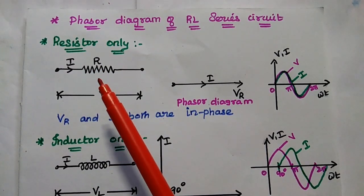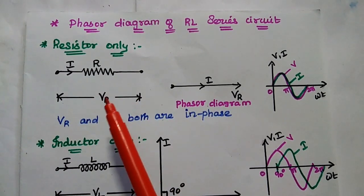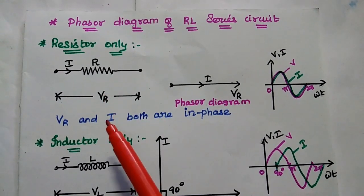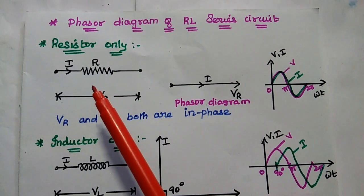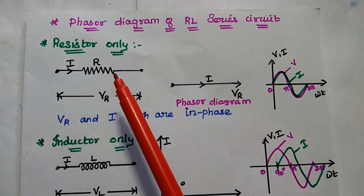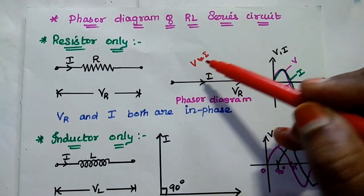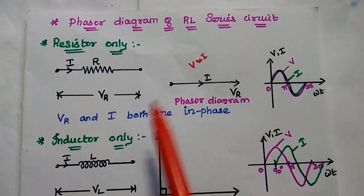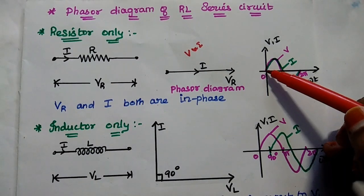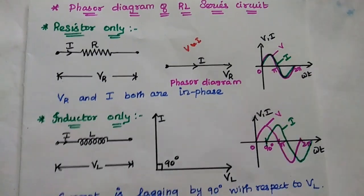First, we consider the resistor-only circuit. The current flows through the resistor and the voltage drop is VR. The relation between current and voltage is directly proportional — if voltage increases, current also increases. The resistor simply opposes the flow of current. So we can say the voltage and current are both in-phase quantities, meaning voltage and current both start at point 0 — the phase is the same.